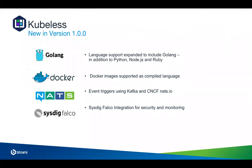We also announced support for NATS events. Once you deploy a function, you can call it over HTTP — what we call an HTTP trigger — the typical scenario of a webhook or HTTP endpoint. But you can also call that function when there is an event in a messaging system. NATS is a very efficient messaging system written in Golang. Originally we supported Kafka, but now we've decoupled our runtime and event management, which allows us to support many different types of event triggers. NATS was the first we advertised as part of the KubeCon 1.0.0 release.